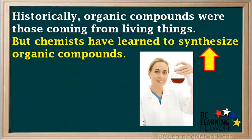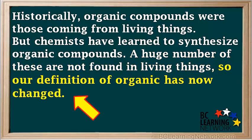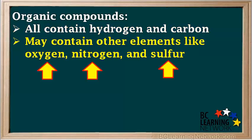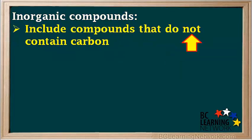Historically, organic compounds were those coming from living things, but chemists have learned to synthesize or make organic compounds using chemical reactions, so a huge number of organic compounds are not found in living things. Our definition of organic has now changed. Organic compounds all contain hydrogen and carbon, and many contain elements like oxygen, nitrogen, or sulfur.